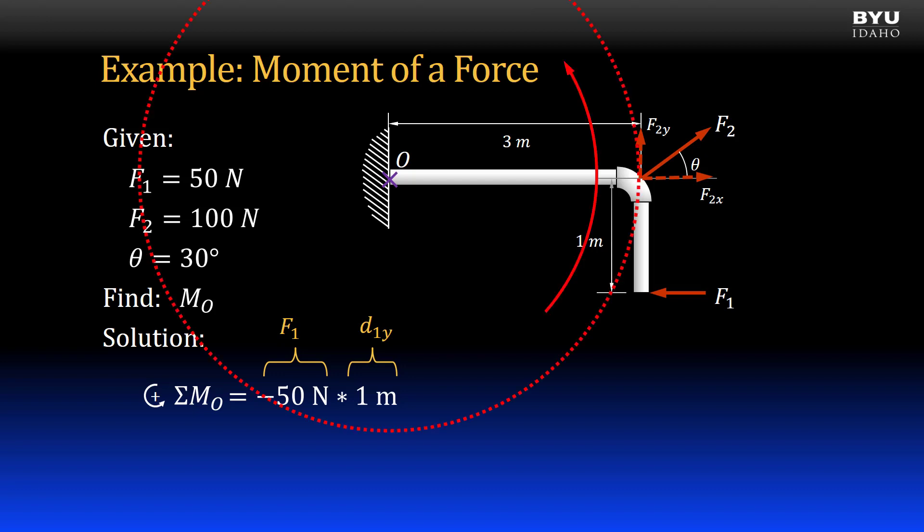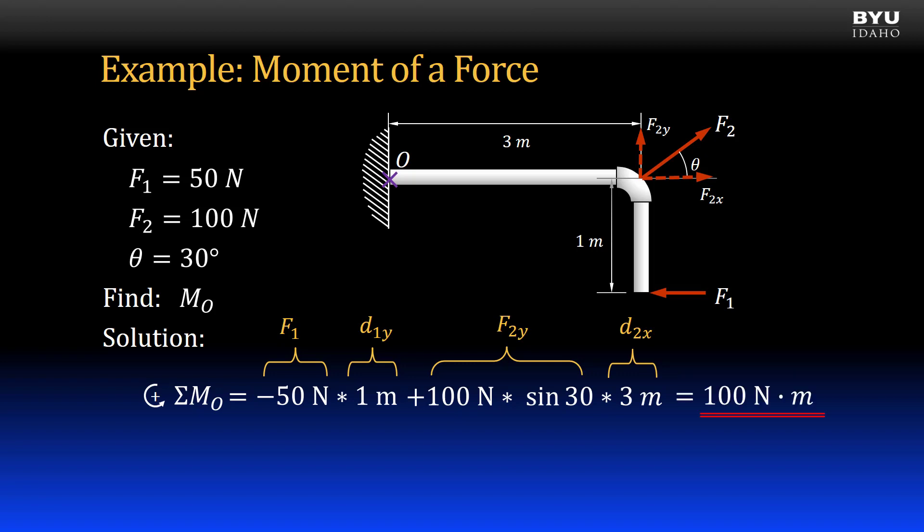Again, for visualization, I draw a circle centered at point O that extends to the line of action of the vertical component of F2. We see that the moment arm distance is 3 meters in the perpendicular or X direction, and the rotation direction about point O is counterclockwise, or positive. I add this to the moment equation as 100 newtons times the sine of 30 degrees, with a moment arm of 3 meters. We get an answer of 100 newton meters.